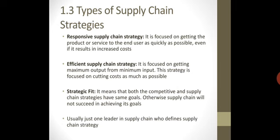Second strategy جو ہے وہ ہے efficient supply chain strategy۔ Efficiency کی definition — مختلف courses میں ہم پڑھتے ہیں — efficiency means minimum input سے maximum output حاصل کرنا۔ That is one of the goals of managers، اور اس میں supply chain manager کا بھی goal یہی ہوگا کہ کم سے کم cost میں، کم سے کم resources سے ہم maximum output حاصل کر سکیں۔